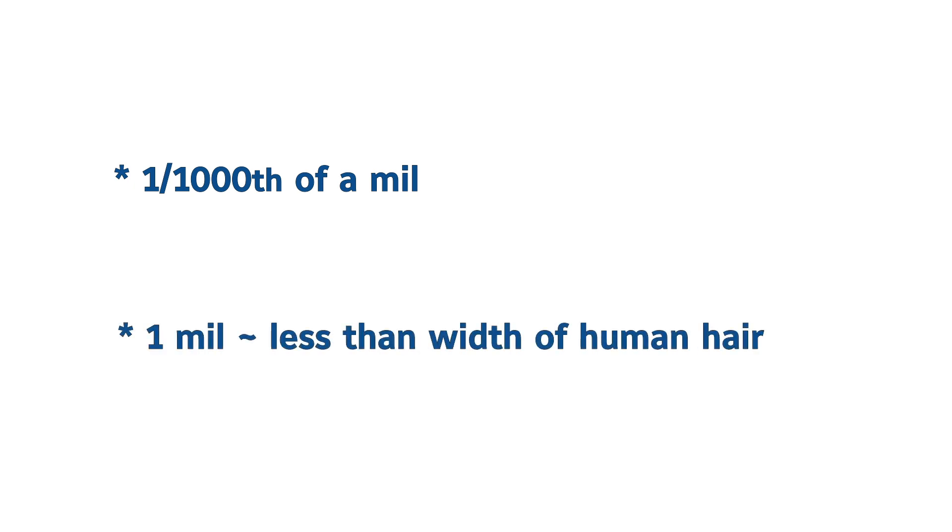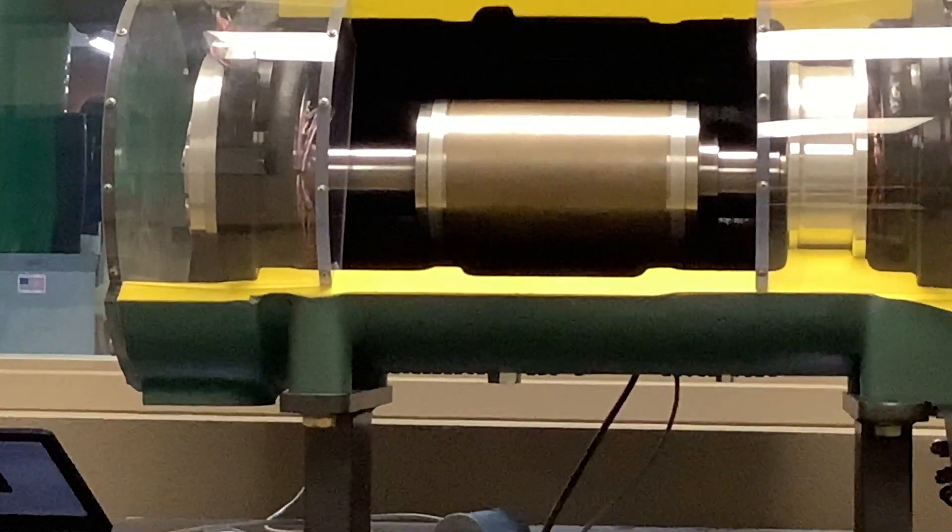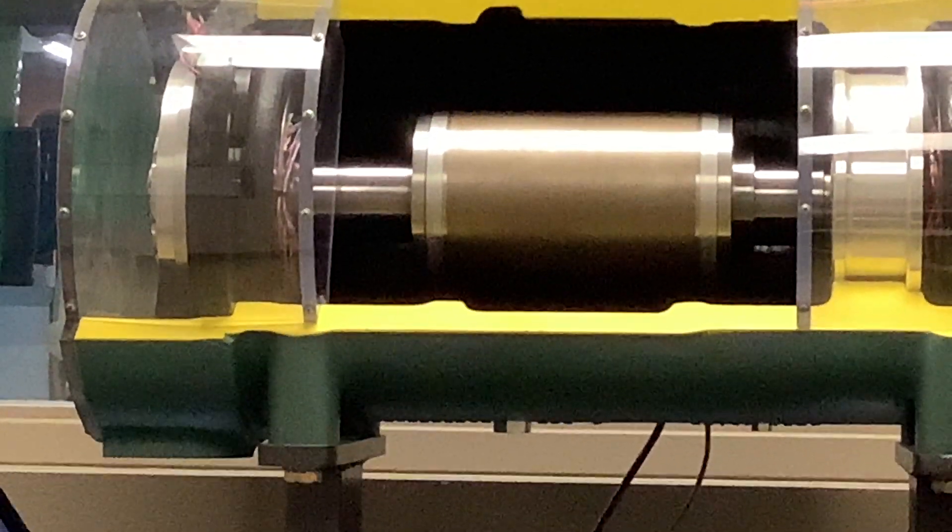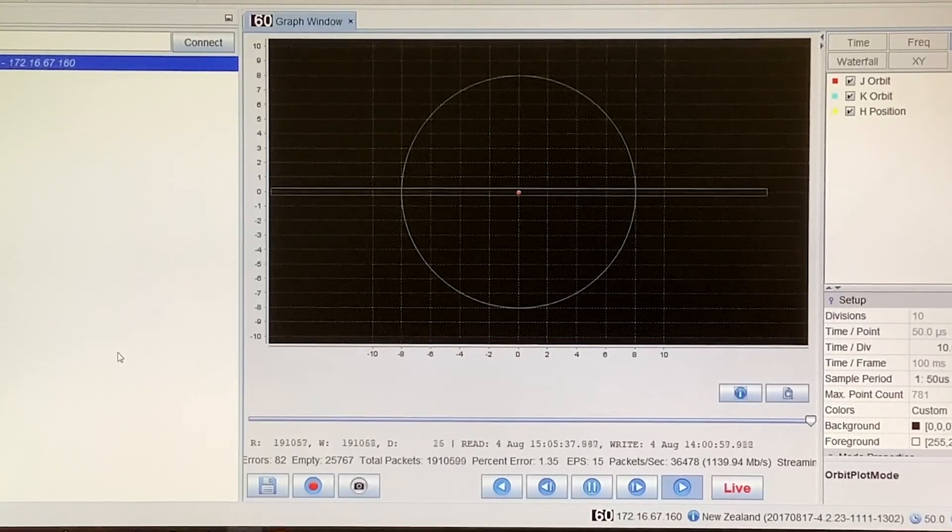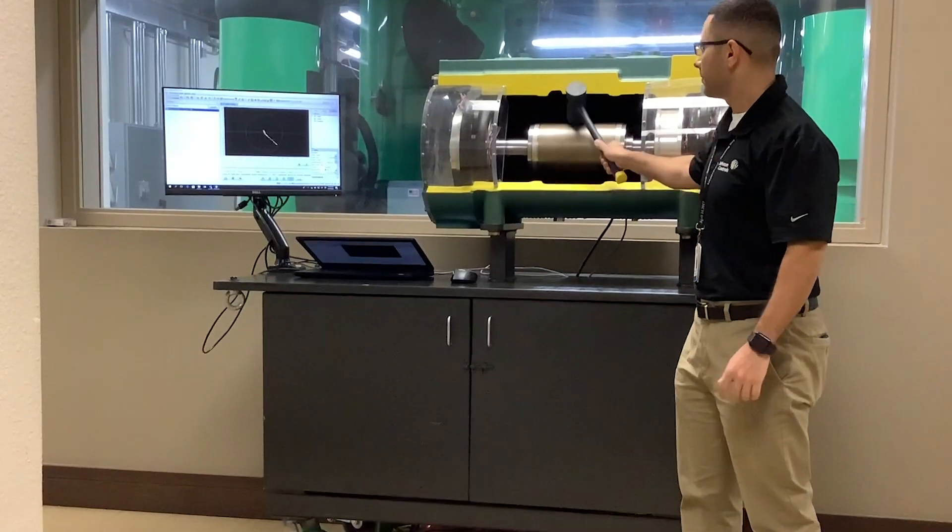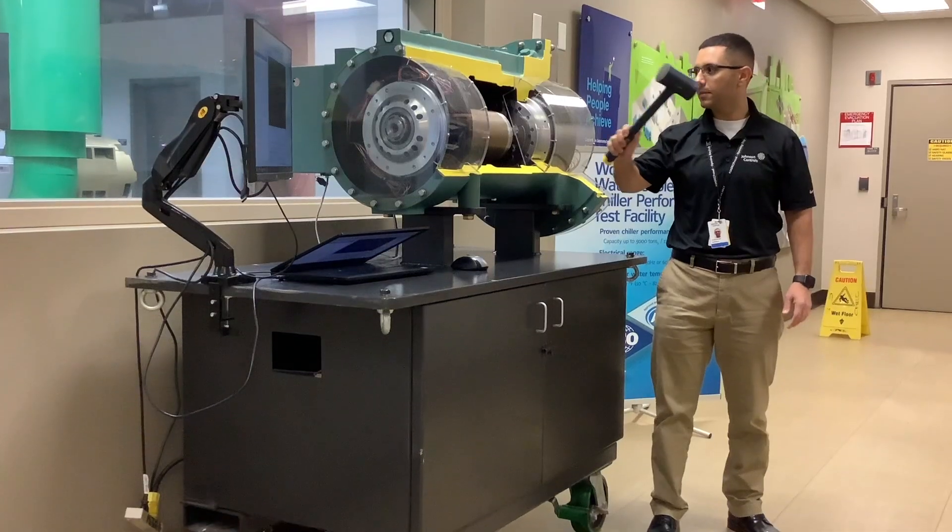The controller adjusts the output of the magnet 20,000 times a second to hold position. So when the assembly is hit and drops, you can instantly see on the monitor that the controller gets the assembly back to the friction-free field.